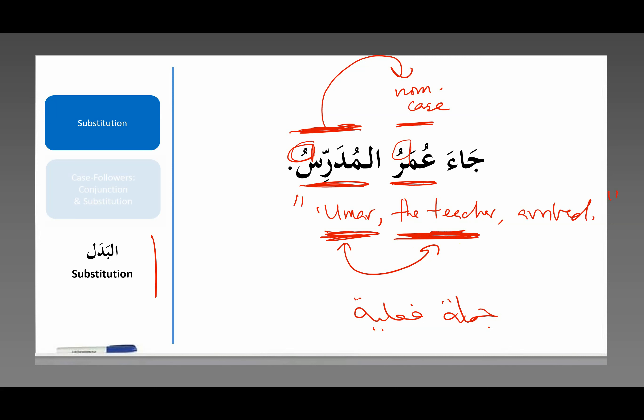Because it's literally talking about the same person, they both take the same grammatical function — the same grammatical case — in the sentence. It's like this is the fa'il part two. Although the sentence only has one fa'il, this is being substituted for it. And that is the function of البدل — the substitution.